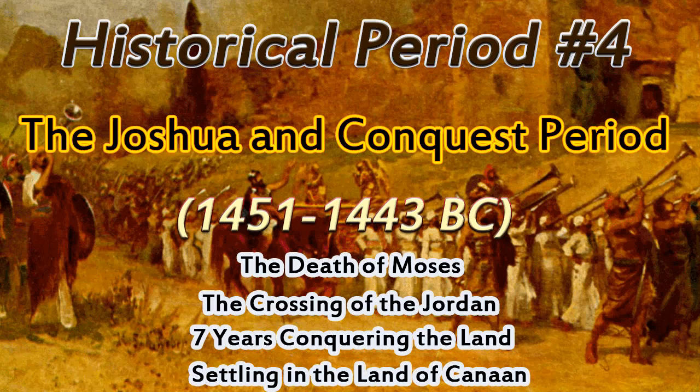Number two, the crossing of the Jordan, which was the event when the Hebrews crossed over into the promised land — the land flowing with milk and honey. Joshua led them, ordering the priests to carry the Ark of the Covenant, and the waters of the Jordan split in two as they entered into the promised land. Joshua set up a memorial to remember the great event.